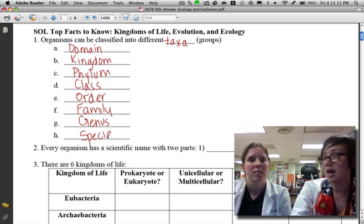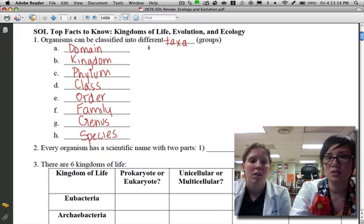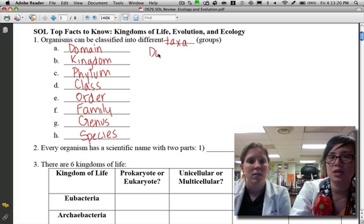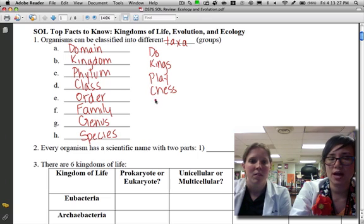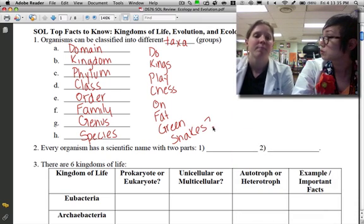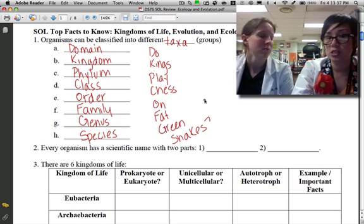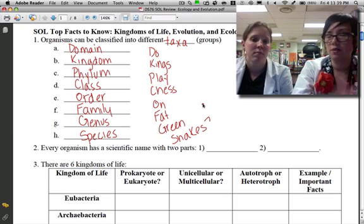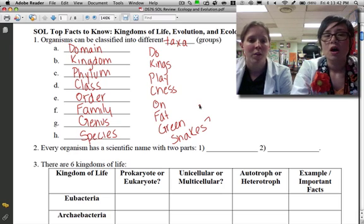That's a lot to remember, so we have a mnemonic device to make it easier. We're going to turn our mnemonic device into a question because now we have domain at the top: Do kings play chess on fat green snakes? This helps us keep the order straight because species fits inside of genus, genus inside of family, and so on. Kind of like those Russian dolls.